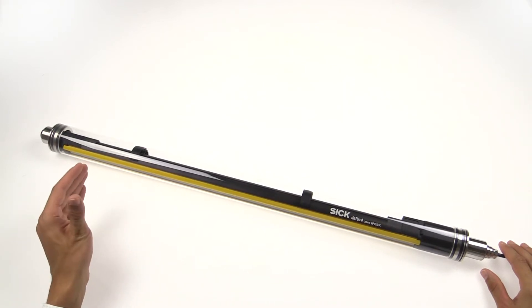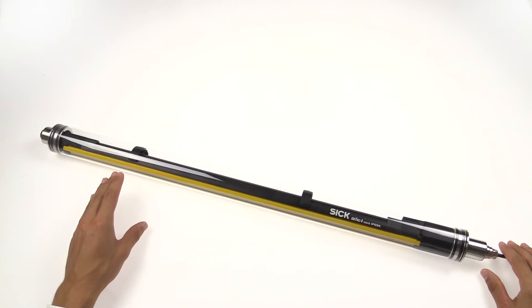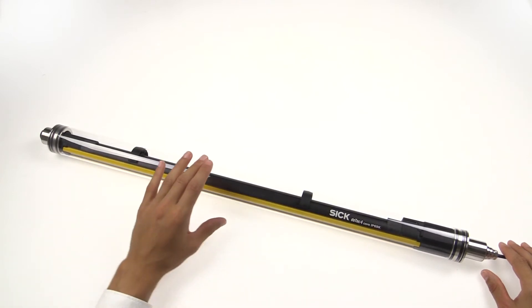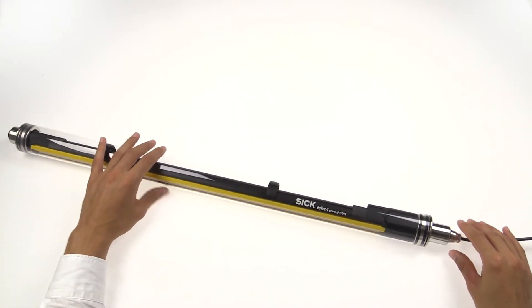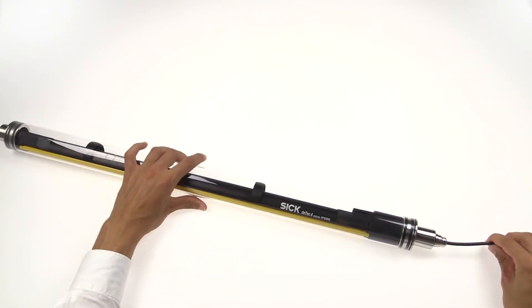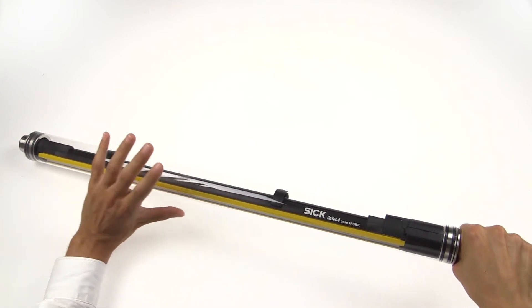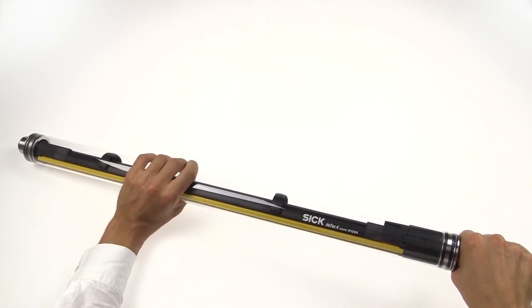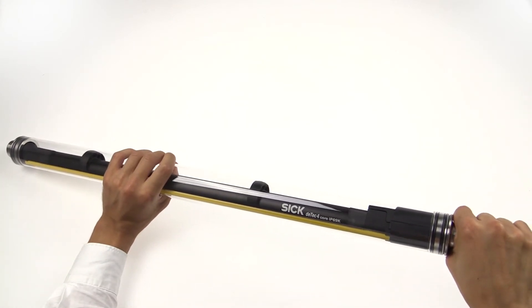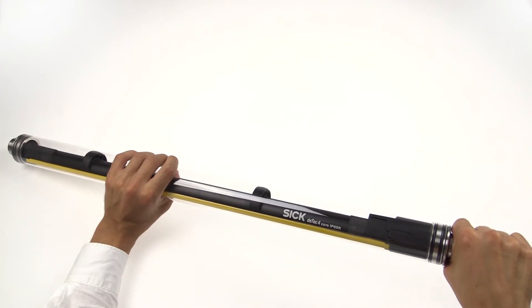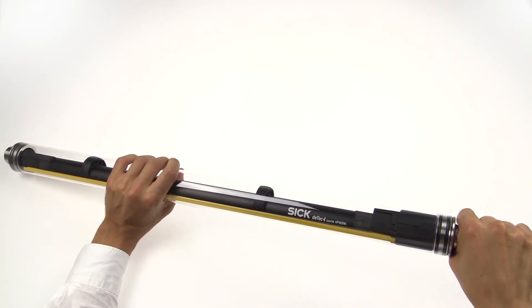So let's start with the replacement of the protective housing. Therefore, you grab with one hand the end cap where the cable comes out. With the other hand, you grab the protective housing in the middle. Now you can unplug the protective housing with a little rotation and a little power.